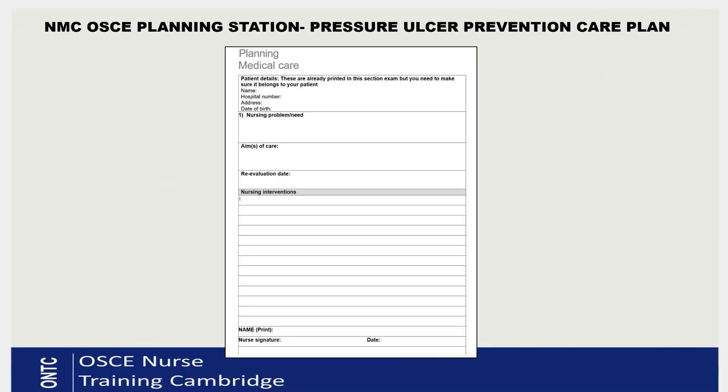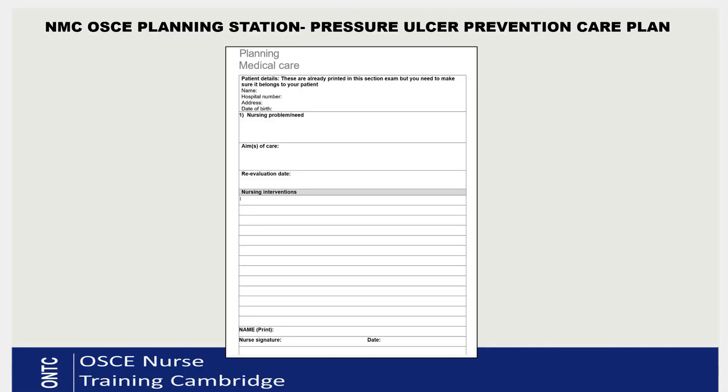The inside page is the blank page where you write your first care plan, and then there's a second page for the second care plan — that's how you complete two care plans for this patient. Today we're only going to look at one of the possible nursing needs for this scenario. The template covers: nursing need, aim of care, reevaluation date, and nursing interventions. Now let's look at the completed sheet so I can show you how I've completed this.